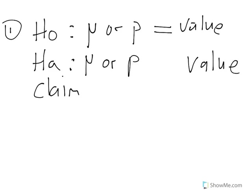Then you have three options: greater than, less than, or not equal to. These are based on your claim. So if you think Pepsi is not putting 16 ounces in their soda, then your claim would be the average is less than 16 ounces. If you think Subway is not giving you a foot-long sandwich, then the average is less than a foot-long. Not equal means that the value has changed — it could be greater than or less than.